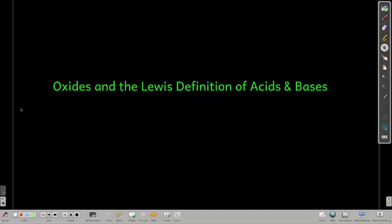In this module, we're going to talk about oxides and how an oxide can be acidic or basic or can form an acidic or a basic solution. And we're also going to talk about the Lewis definition of acids and bases, our third definition for acids and bases.